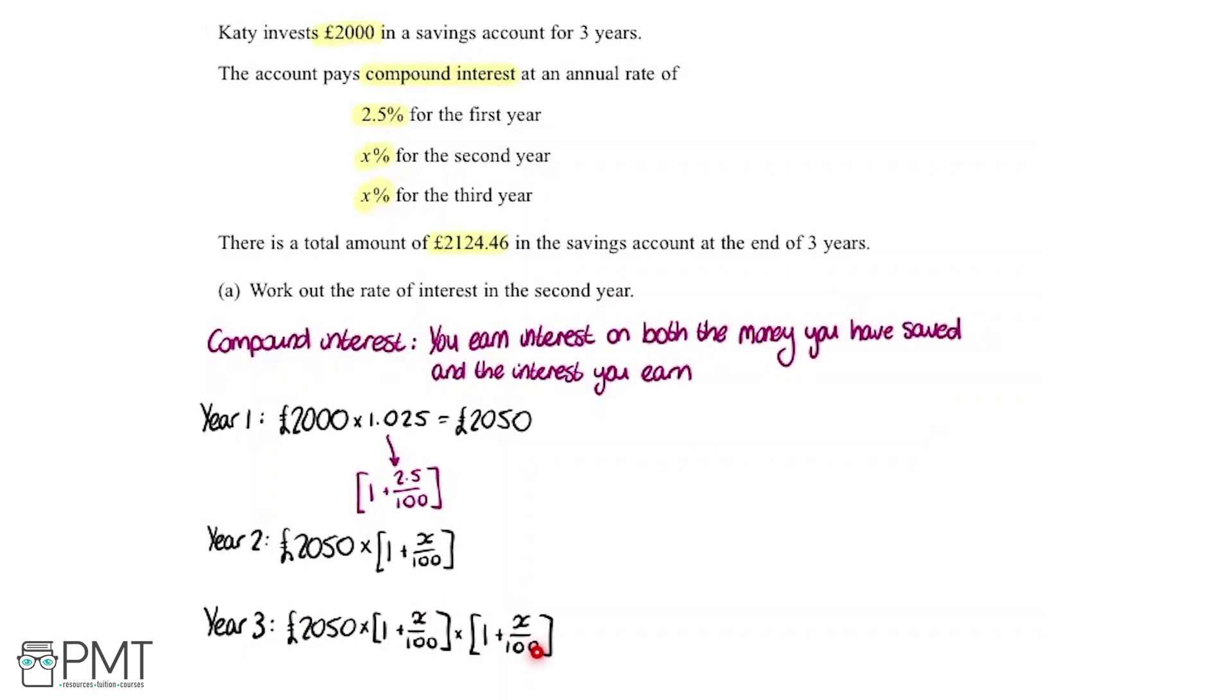Now we need to work with this to find out what x is. The way to do that, we need to make an equation. And luckily, if we look back into the question, we see that the total amount of £2,124.46 is in the savings account at the end of the three years.